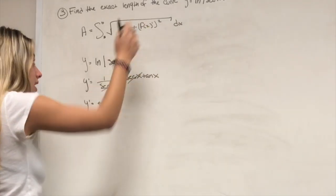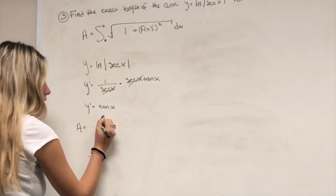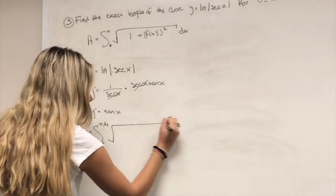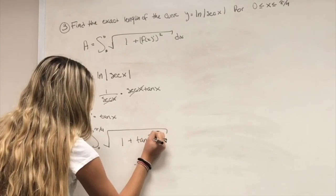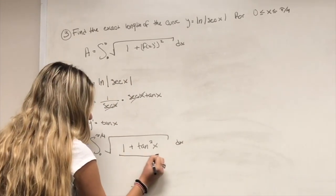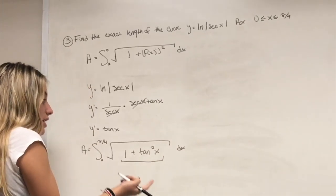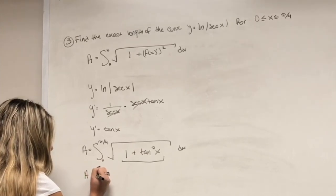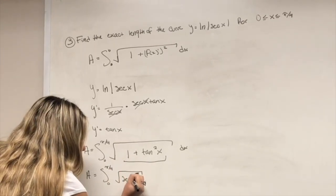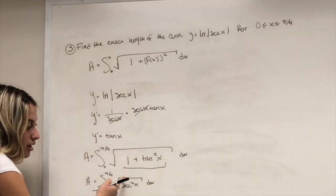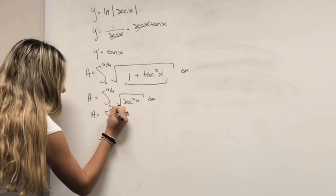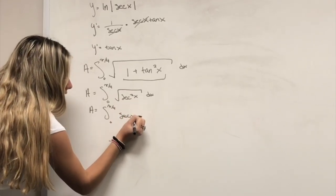Plug in: arc length = integral from 0 to π/4 of the square root of 1 + tan²x dx. Using the identity 1 + tan²x = sec²x, this becomes the integral of the square root of sec²x dx, which simplifies to the integral of sec x dx.